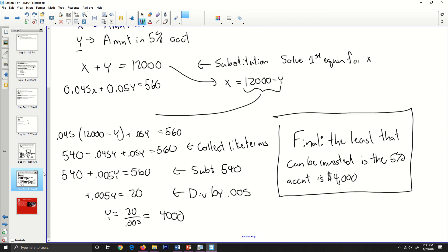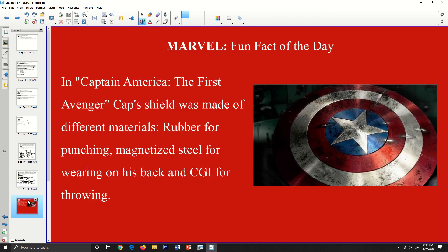Well, that's all I got for today, folks. Today, the Marvel fun fact of the day: in Captain America, the first Avenger, Cap's shield was made of different materials. It was rubber for punching, magnetized steel for wearing on its back, and CGI for throwing. That's all I got for today, folks. Have a good one. Bye.